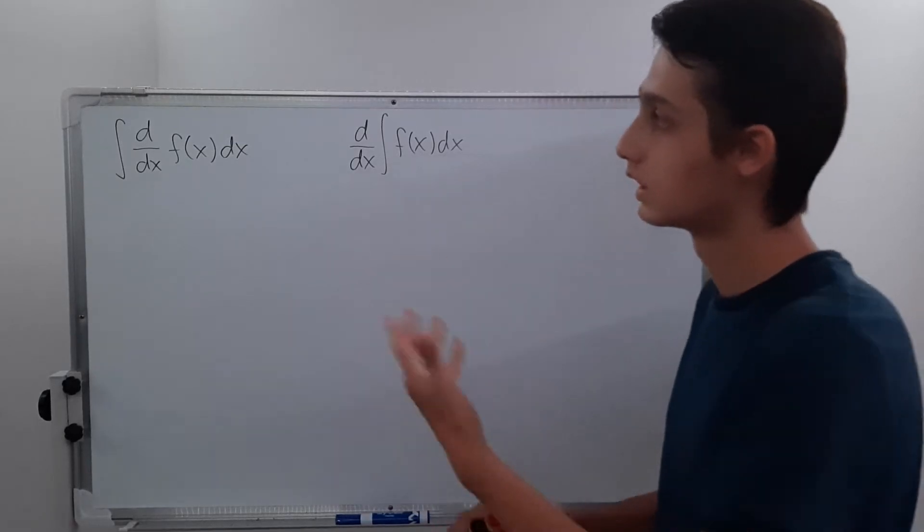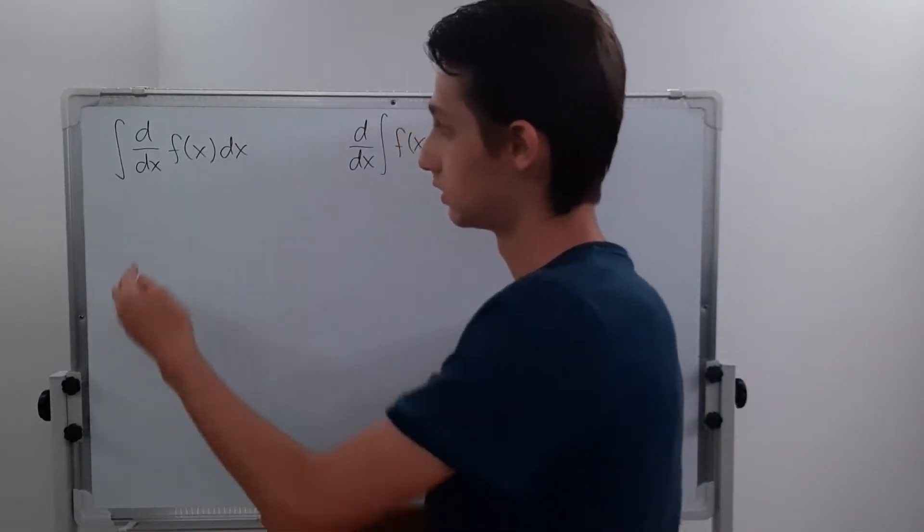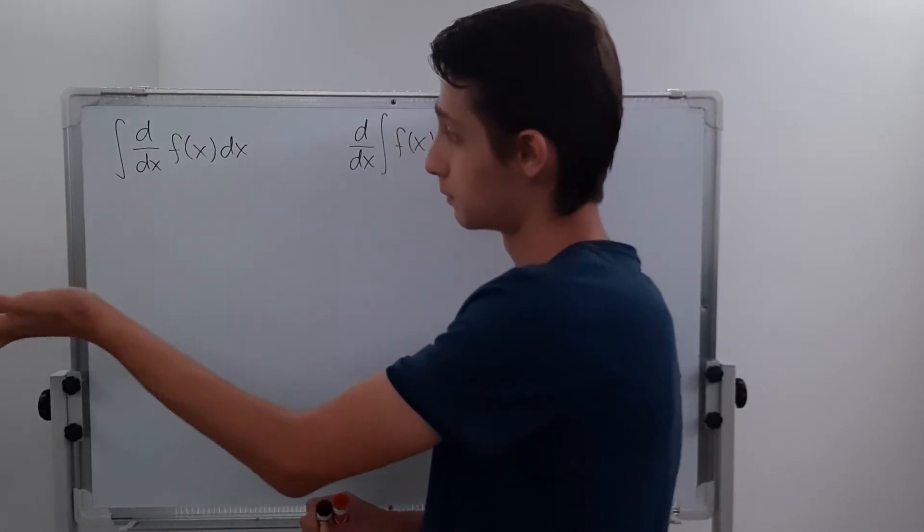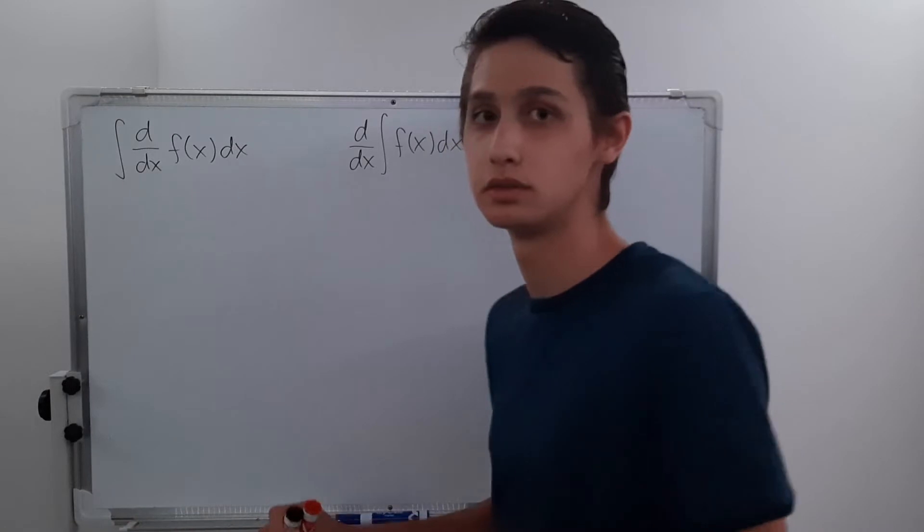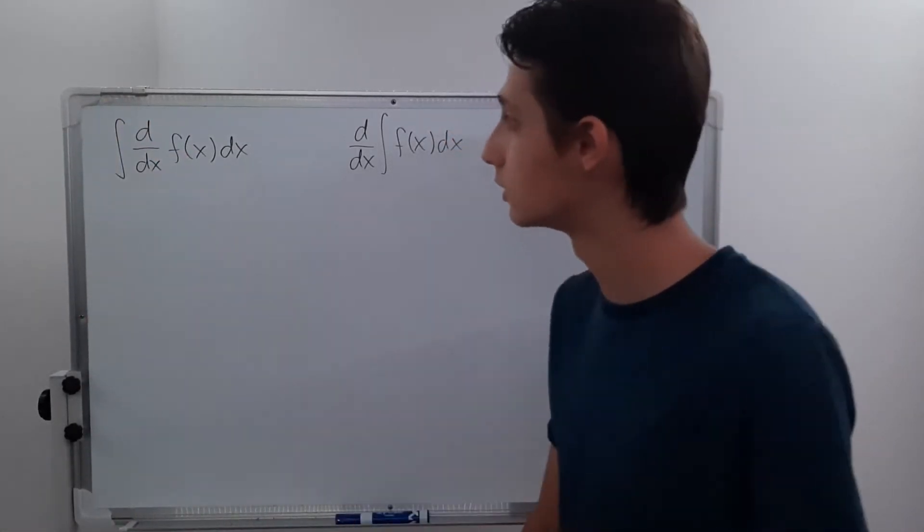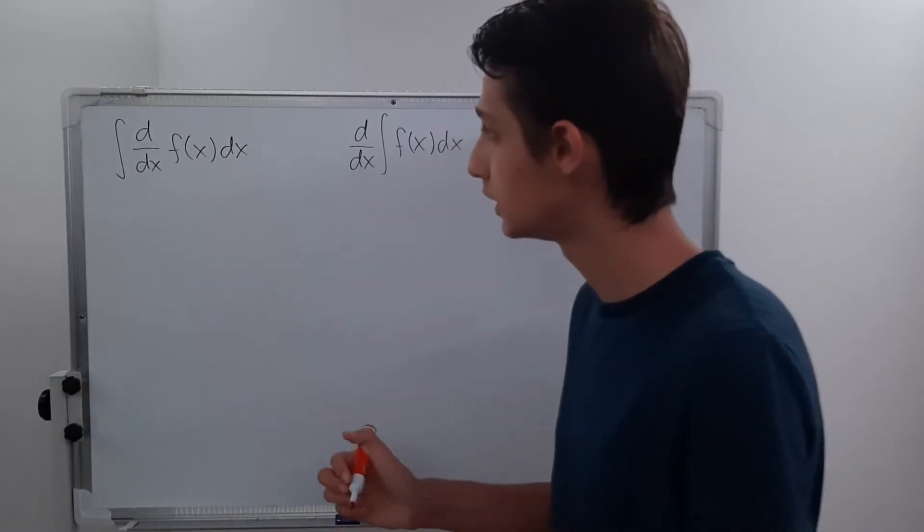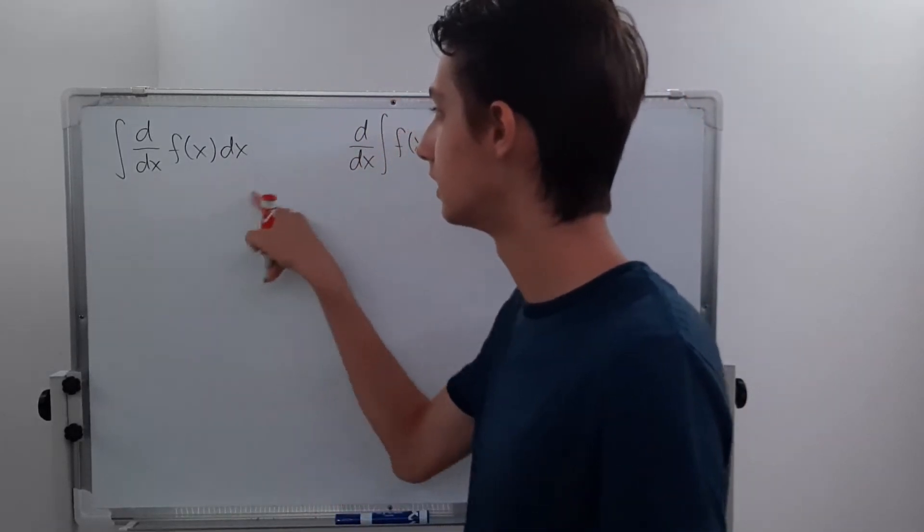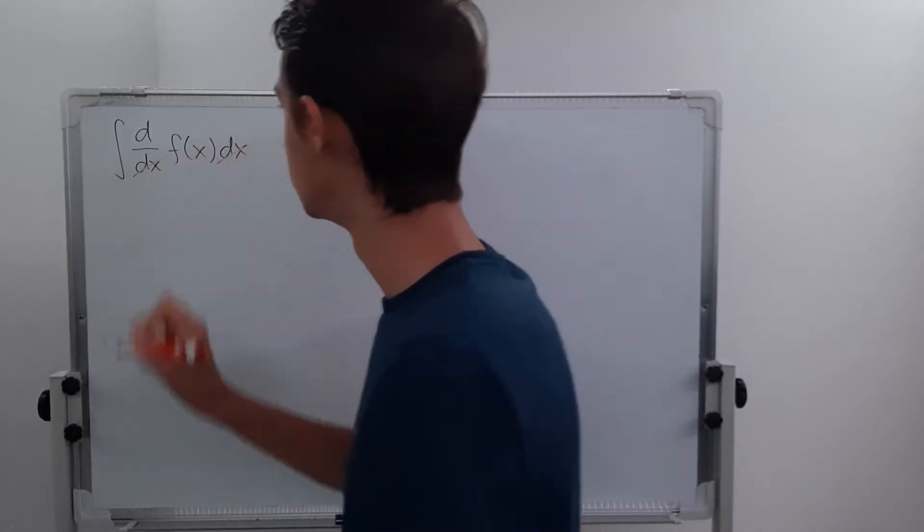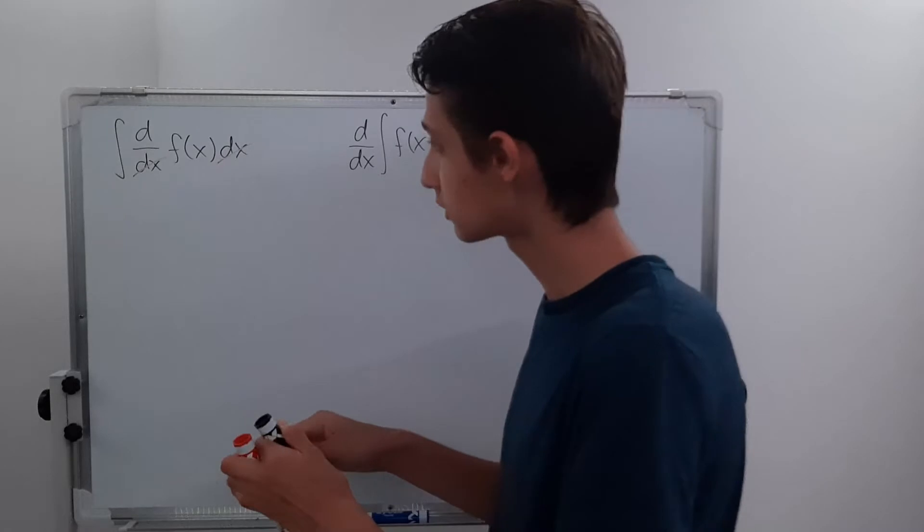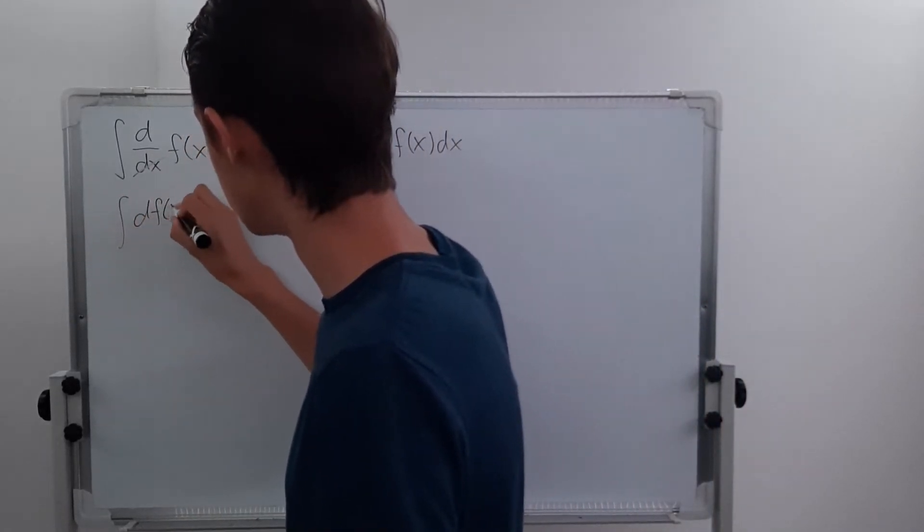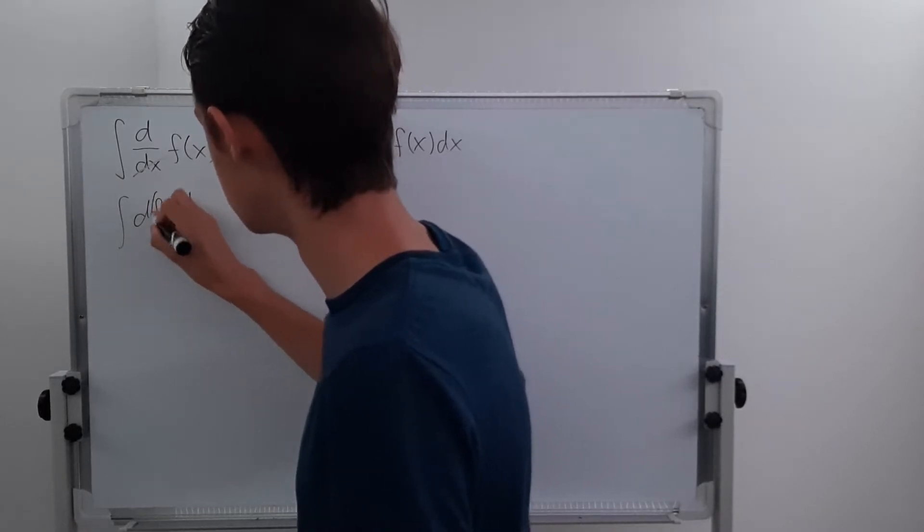Well, we can think of our first one as being the integral of a derivative of some function. We could just say it's the fundamental theorem of calculus, but let's try to understand this more. We can notice there's a dx here and a dx here, we can kind of just cancel them out, and we are left with the integral of df of x, and you can kind of put the f of x in parentheses.